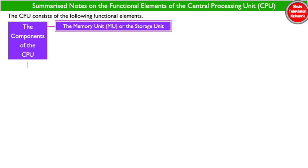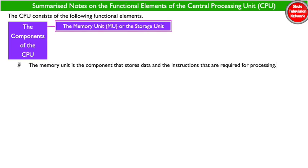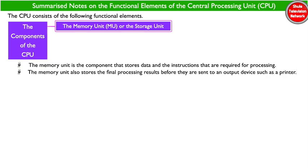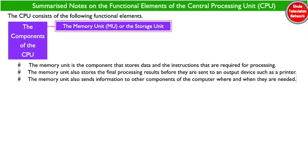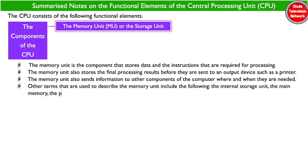The memory unit is the component that stores data and the instructions that are required for processing. The memory unit also stores the final processing results before they are sent to an output device such as a printer. The memory unit also sends information to other components of the computer where and when they are needed.